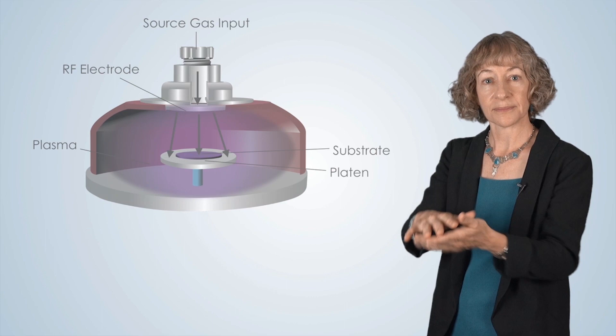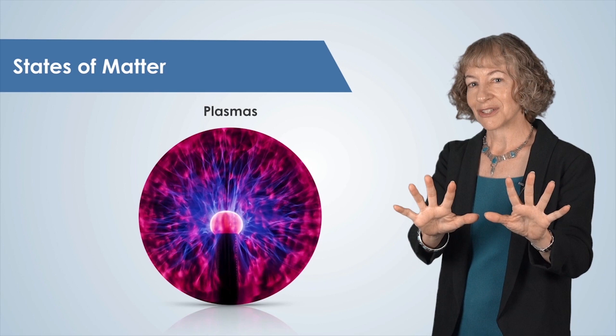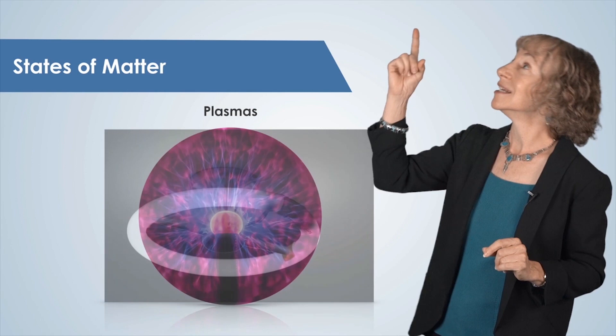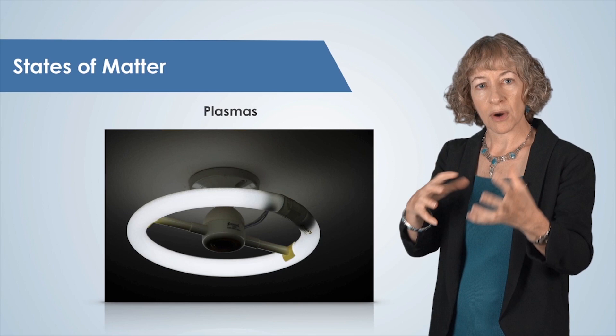You've probably heard of the states of matter that we commonly experience, which are solid, liquid, and gas. Plasma is a fourth state of matter, but don't let that scare you. We use plasmas in our everyday lives. One common use of plasma is in the fluorescent light bulbs. In this case, the plasma in a light bulb is used to generate light. In our PECVD system, we use a mixture of gases to form the plasma that deposits the film onto the substrate.